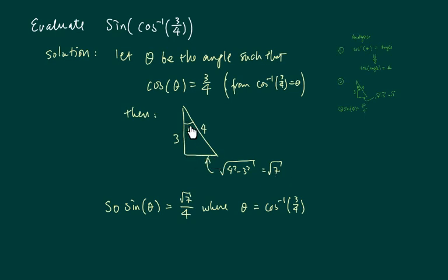We do not need to know what the theta angle is in degrees or radians or any other measurement because we're asked to find sine of this theta. Sine of theta is opposite over hypotenuse, and it's radical 7 over 4. So that's how you solve this type of problem.